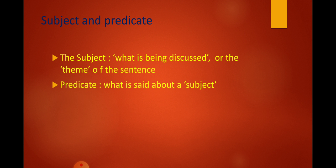Our lecture today is going to start with the parts of a sentence, or one of the classifications of the sentence. We can classify the sentence into a subject and a predicate. The subject is what is being discussed or the theme of the sentence, while the predicate is what is said about a subject. From this classification, we could understand that we divide the sentence into a subject that represents the topic of the sentence, and the predicate that represents the idea that is said about the topic or theme or subject.